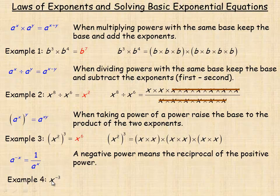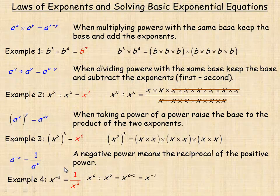In example four, x to the negative three equals one over x cubed — the reciprocal of x cubed. To show why this should be true, consider dividing x squared by x to the fifth, which should evaluate to x to the negative three or one over x cubed.